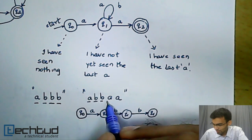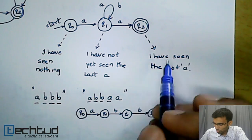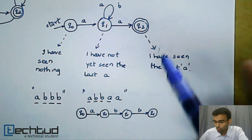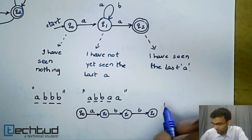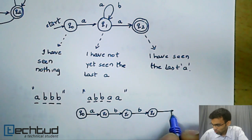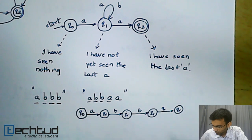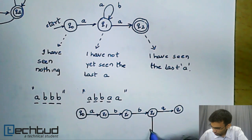However, on the next letter A, from Q1, I can either go to Q1 or to Q2, and I must represent this. I go to either Q1 on an A or I can go to Q2.